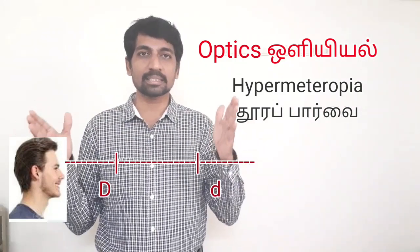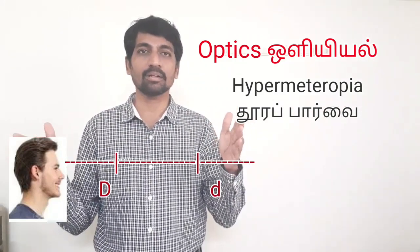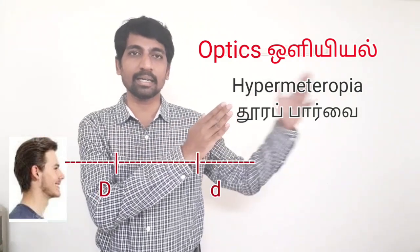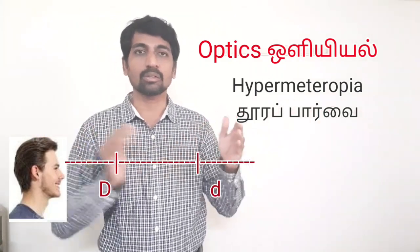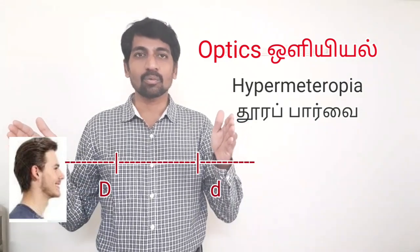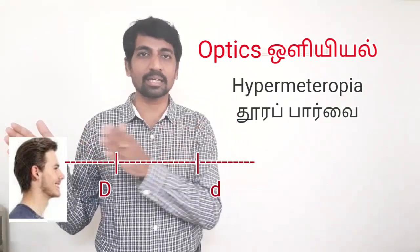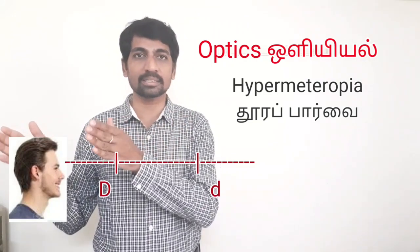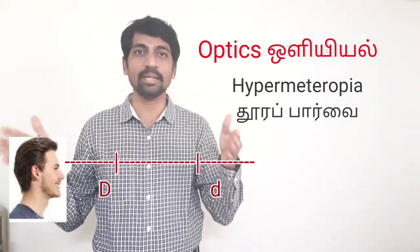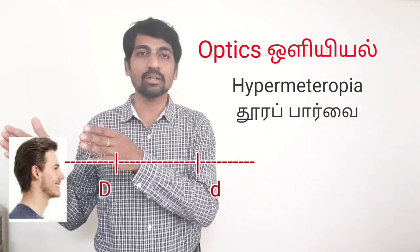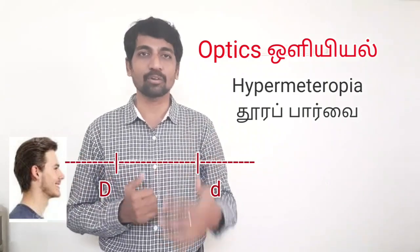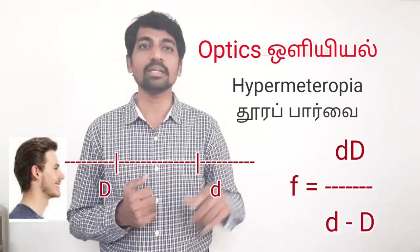With the convex lens, suppose a person can see clearly up to a particular distance d. Objects at that distance d are clear. The focal length f of the required corrective lens is given by: f equals d times D divided by d minus D, where D is the near point distance.